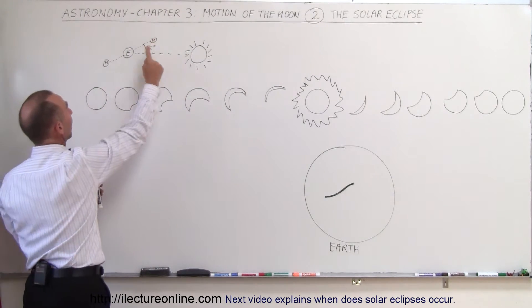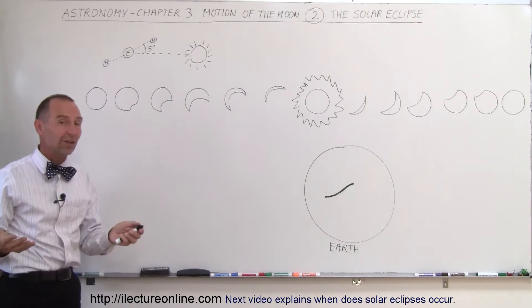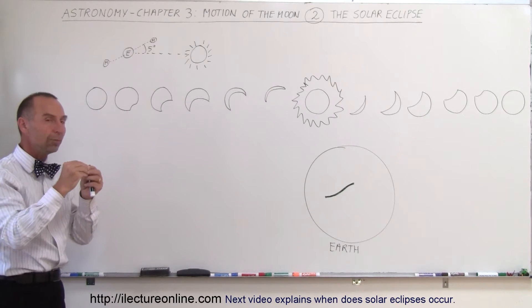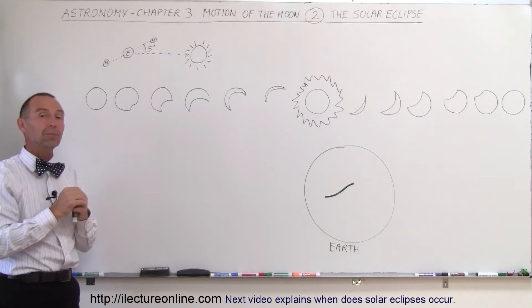But on its path, as it goes around the Earth, twice in its orbit around the Earth, which takes 27.3 days, the Moon will be between, not necessarily between the Earth and the Sun, but will be on the ecliptic plane.